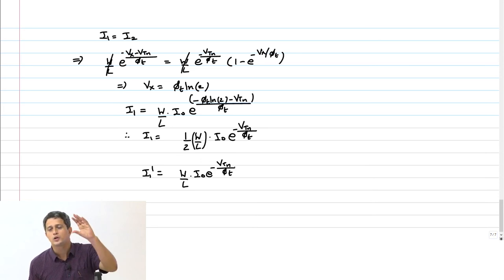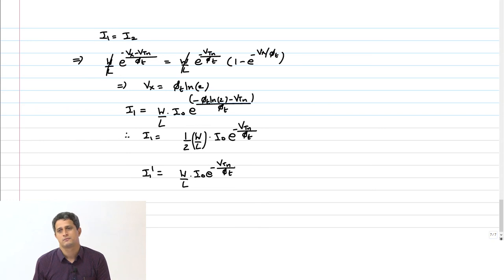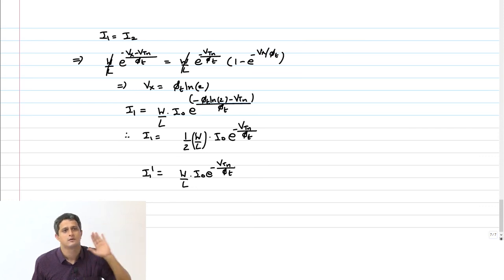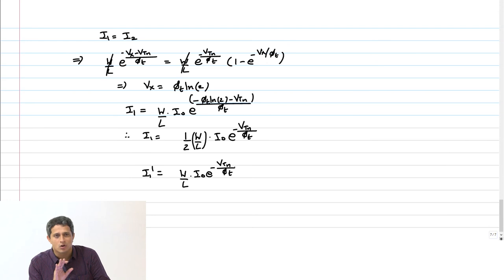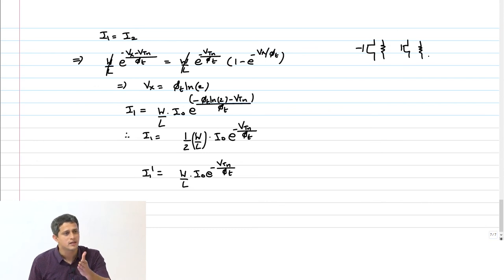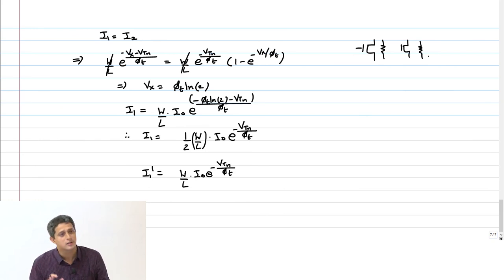What this tells us is: putting two transistors in series simply gives the effect of halving the width. V_X has adjusted itself to φ_T ln 2 so that the leakage current through the two-stack NMOS is half that of the single NMOS transistor with the same width W.